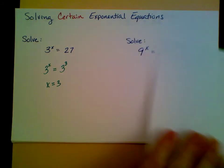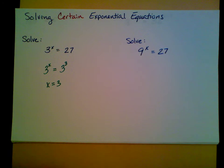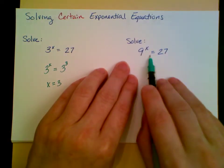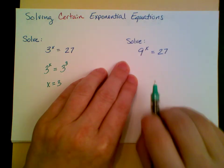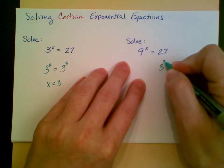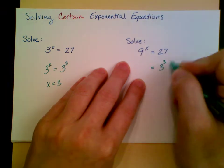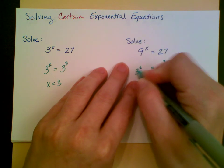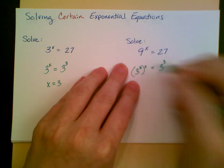Let's look at another one that's not quite so obvious. If I have 9 to the x equals 27, I can rewrite both sides as 3 to the something. Again, 27 is 3 cubed. This is 3 squared to the x.